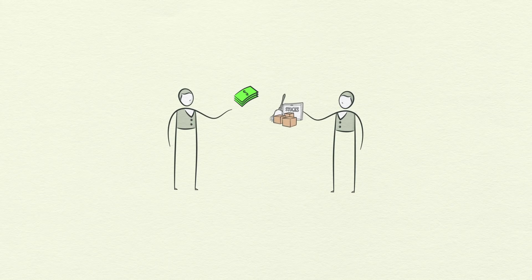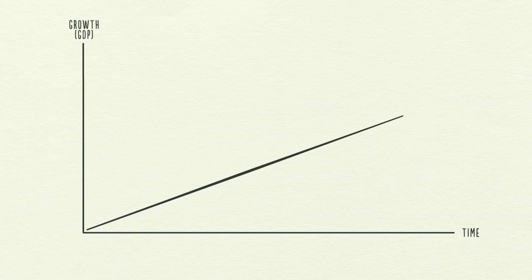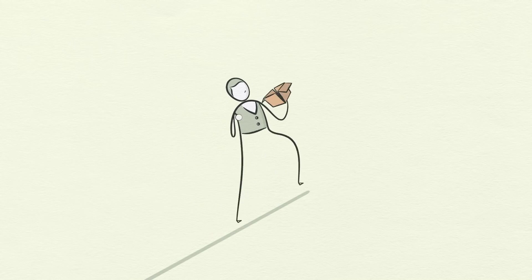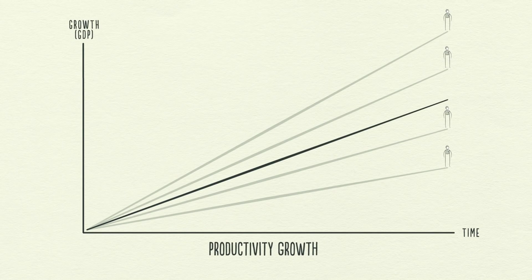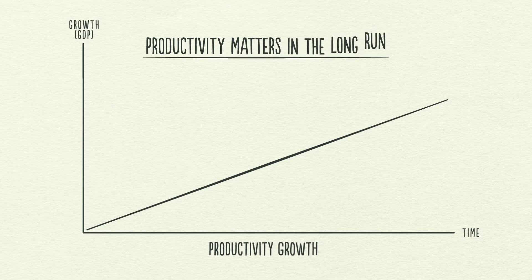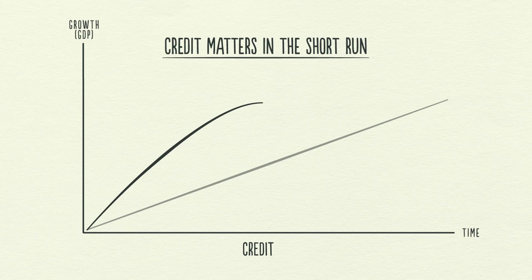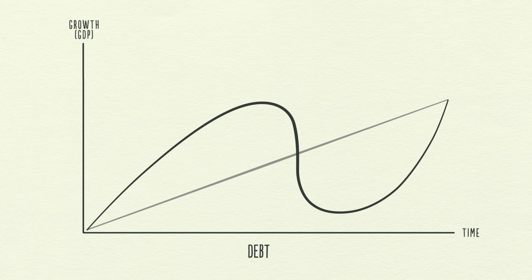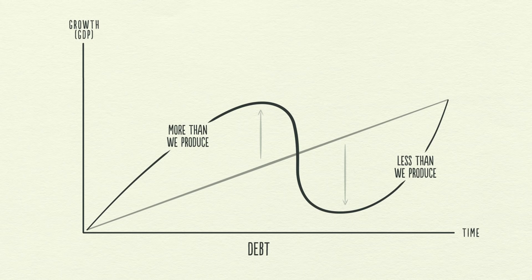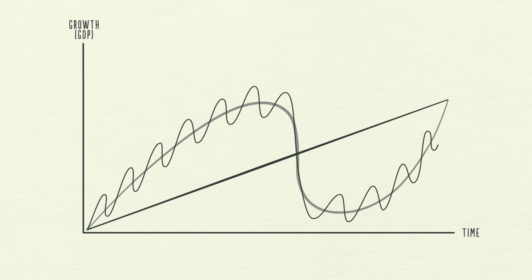In a transaction, you have to give something in order to get something, and how much you get depends on how much you produce. Over time, we learn, and that accumulated knowledge raises our living standards — we call this productivity growth. Those who are inventive and hardworking raise their productivity and living standards faster than those who are complacent and lazy. Productivity matters most in the long run, but credit matters most in the short run. This is because productivity growth doesn't fluctuate much, so it's not a big driver of economic swings. Debt is, because it allows us to consume more than we produce when we acquire it, and it forces us to consume less than we produce when we have to pay it back.